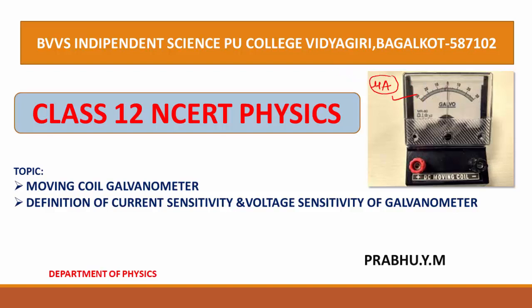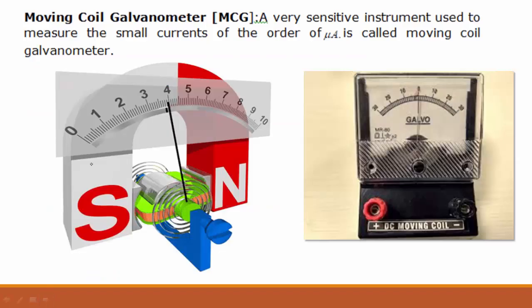I will now explain in detail the construction and working of this moving coil galvanometer, and the definition of current sensitivity and voltage sensitivity of the galvanometer. Moving coil galvanometer — MCG — is a very sensitive device or instrument.